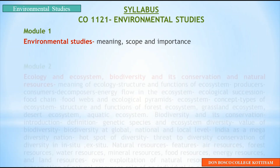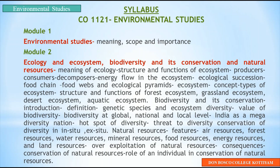The second module is headed as ecology and ecosystem, biodiversity and its conservation, and natural resources. It is divided into three sections. The first section covers ecology and ecosystem — what is ecology and what are the different types of ecosystem. The second section covers biodiversity — what is biodiversity and its conservation, and the importance of biodiversity. The third section covers natural resources — what are the different types of natural resources and their effects.